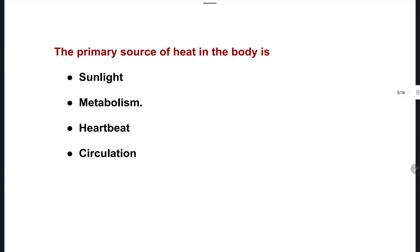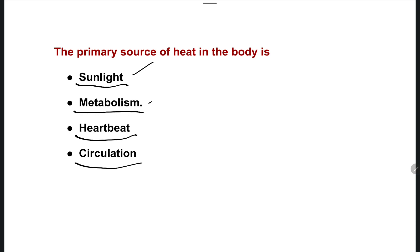The next question: what is the primary source of heat in the body? The primary source of heat production in our body — options are sunlight (external), metabolism (inside the body), heartbeat, or blood circulation.